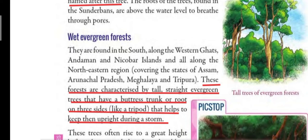Wet evergreen forests are found in the south along the Western Ghats, in the Andaman and Nicobar Islands, and all along the north-eastern region, covering the states of Assam, Arunachal Pradesh, Meghalaya, and Tripura.